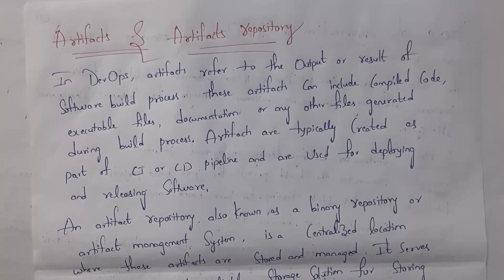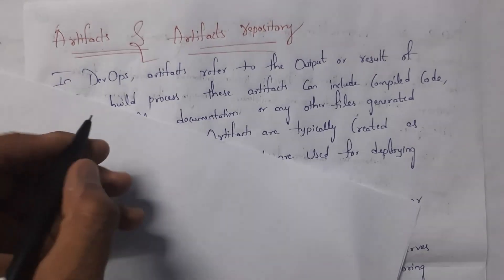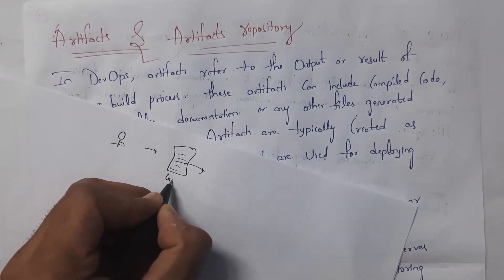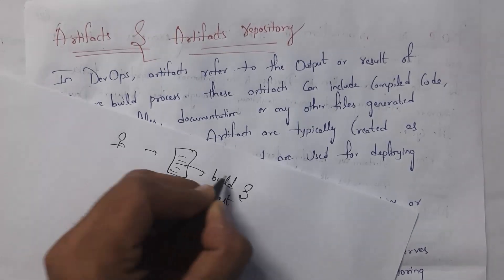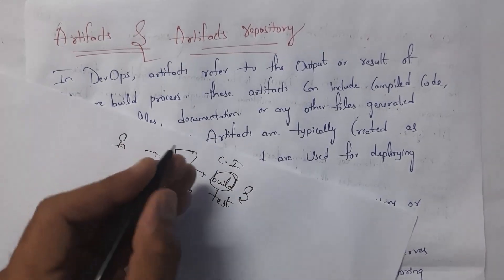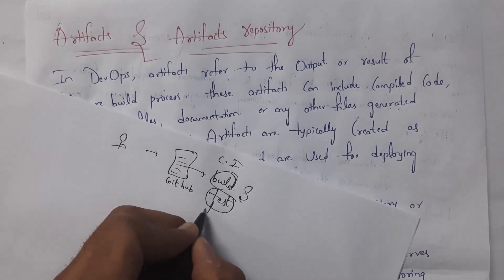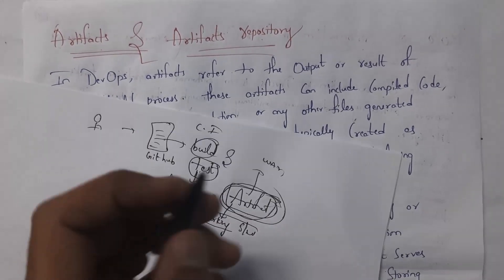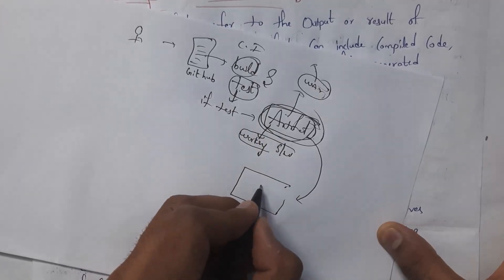Next I will explain what is an artifact. An artifact is nothing but an executable file. For example, as a developer, when I write code and place it in GitHub, that code is automatically built and tested. Build means compiling and executing. If compiling and executing is successful, then the code is tested, and if testing is successful, an artifact is generated. An artifact is our working software — it is a file, which can be a WAR file, JAR file, or any other file.